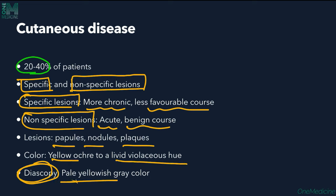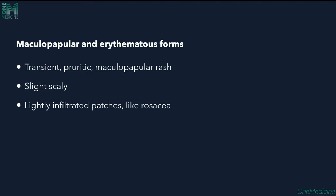On diascopy, a pale yellowish-grey color is seen — this is important. The maculopapular variant is transient, pruritic, and slightly scaly, with a maculopapular rash that is lightly infiltrated, similar to rosacea.